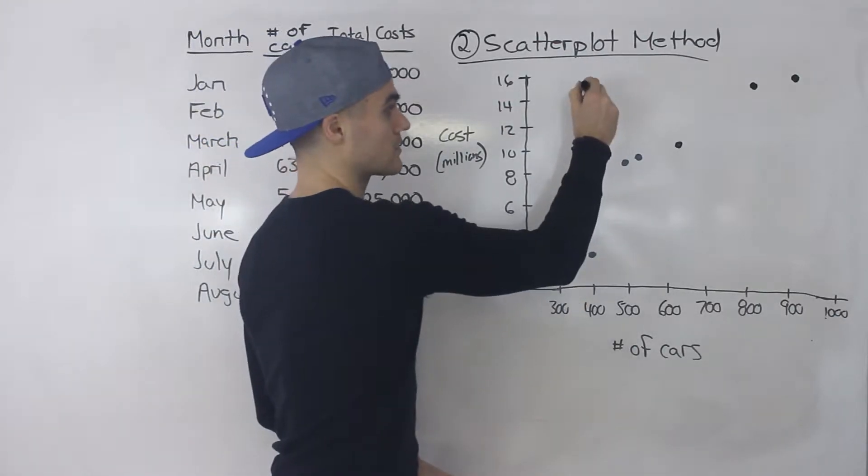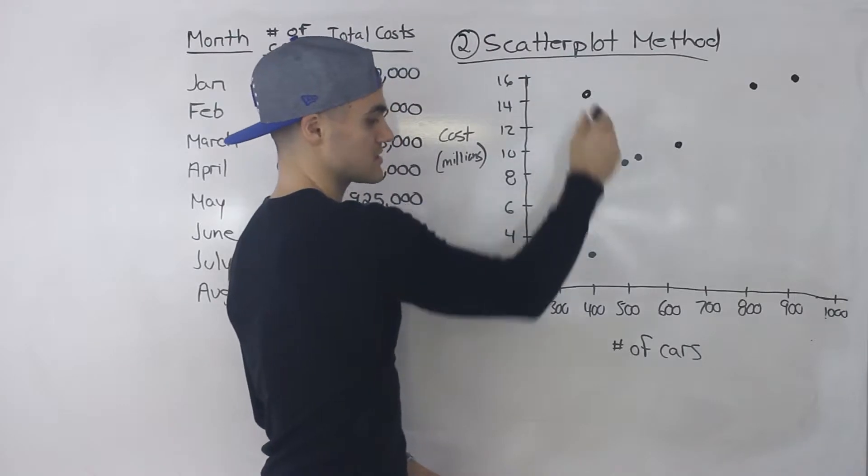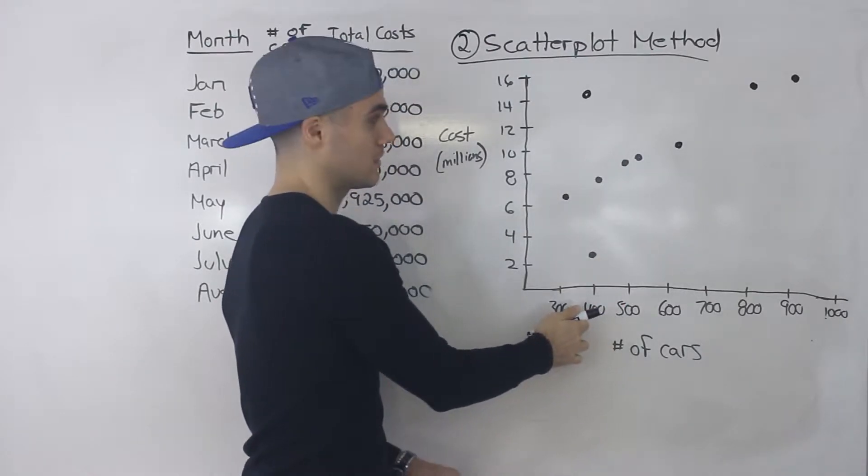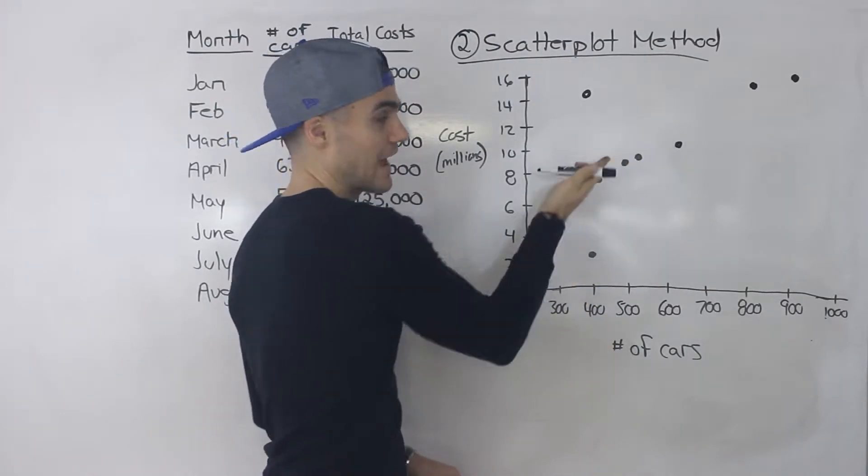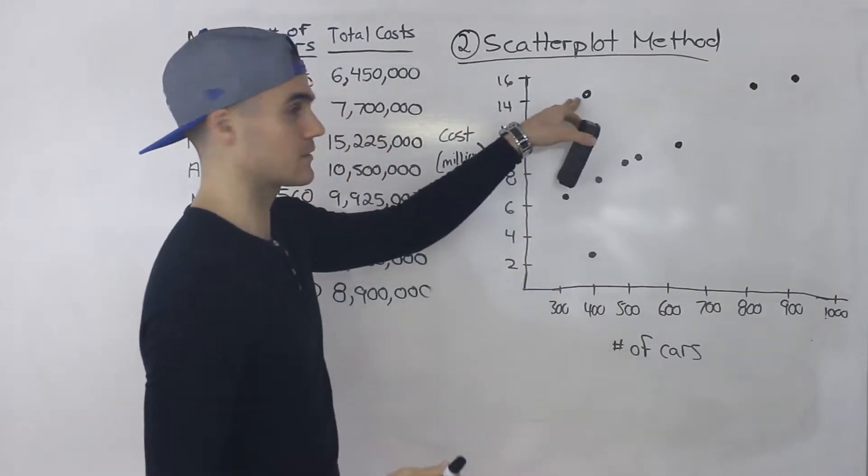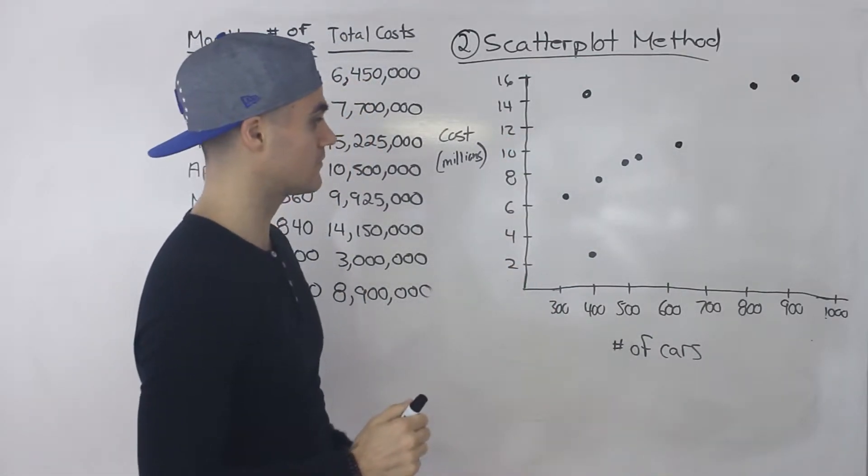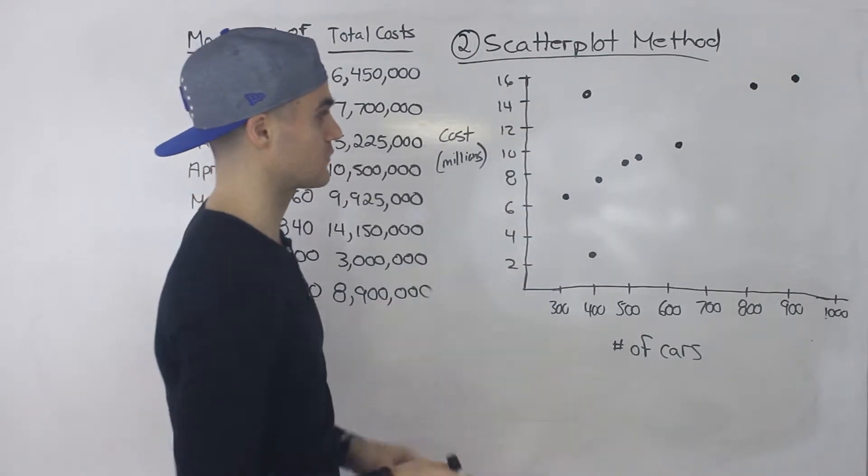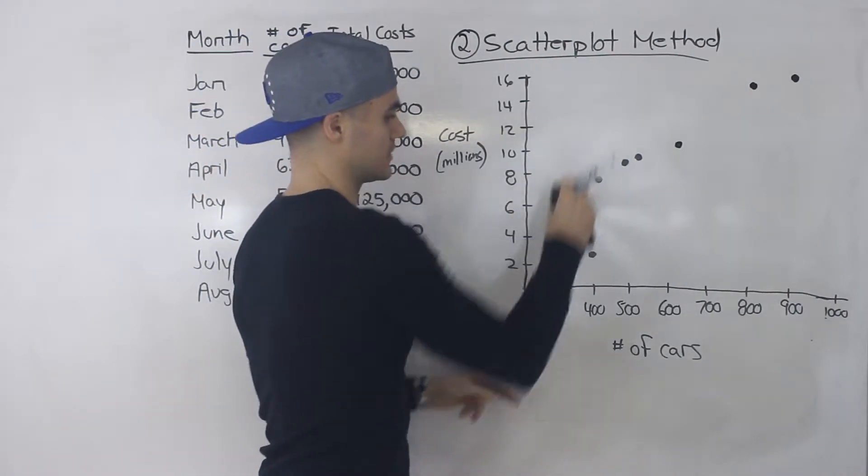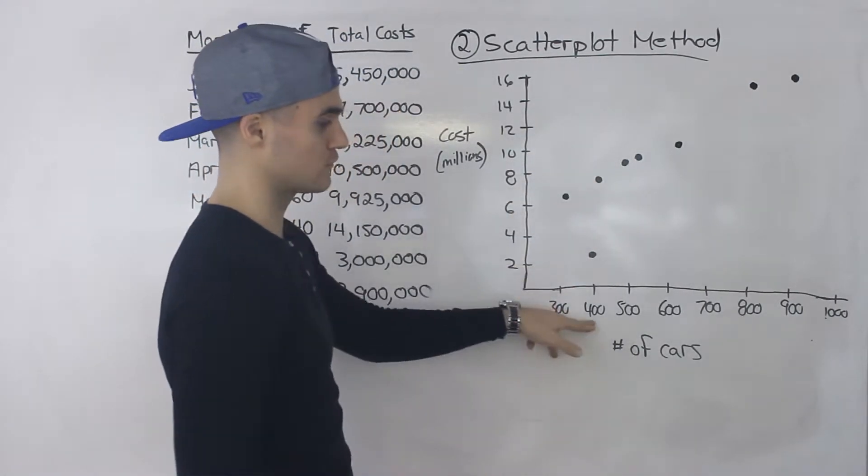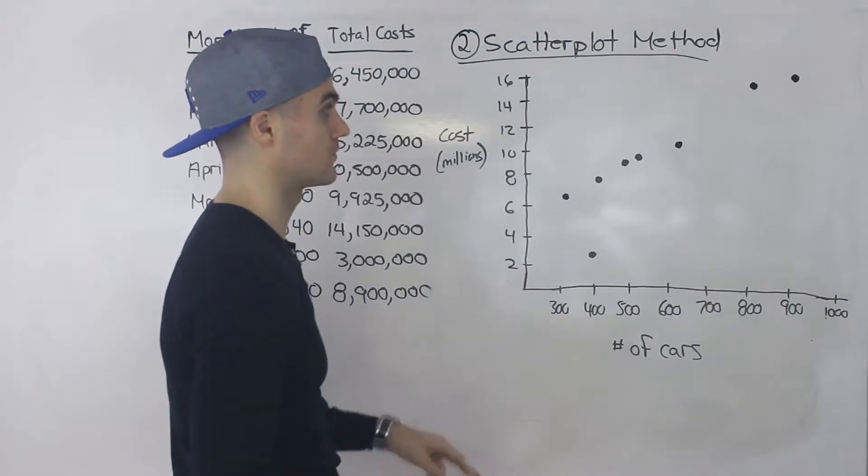You can also have outliers where you could have a high cost for a certain number of output compared to the average. So that could be like maybe something happened in the factory. So different explanations for different outliers. But this one is here. You got a low cost for a certain output which is good.